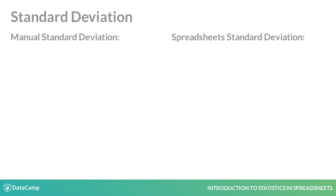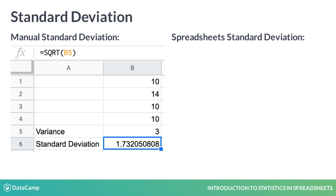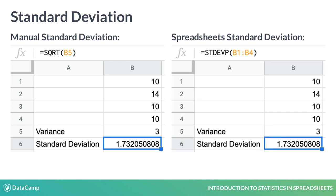This is done by taking the square root of the variance, called standard deviation. After taking the variance with VARP, use SQRT (square root) to calculate the standard deviation. More easily, you can pass an array into STDEVP to get the same answer — here 1.73.